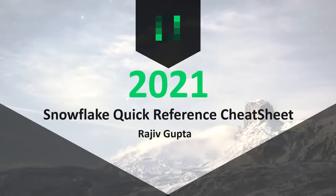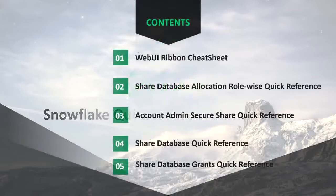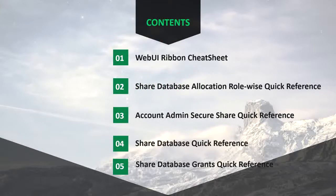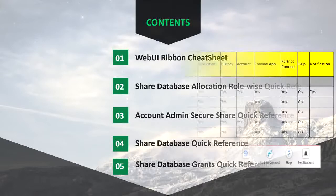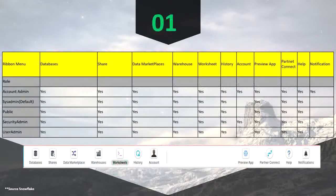What I'm going to cover today is five points: the web UI ribbon cheat sheet, the shared database allocation role-wise quick reference, the account admin secure share quick reference, the share database quick reference, and the share database grant quick reference. So let's start.